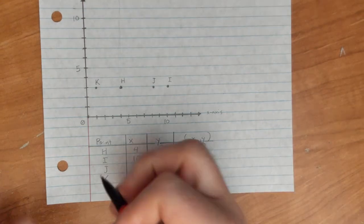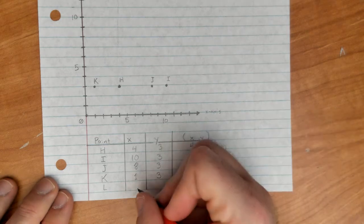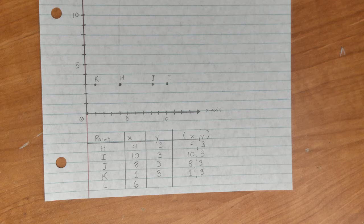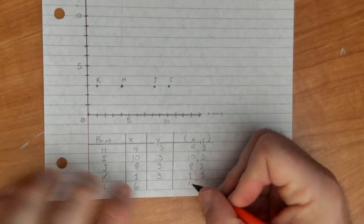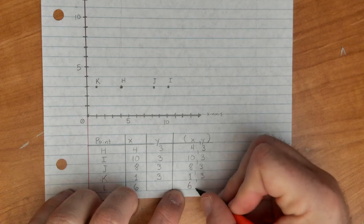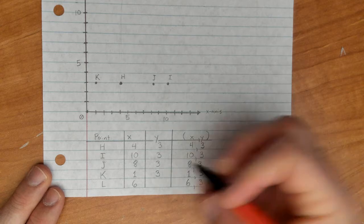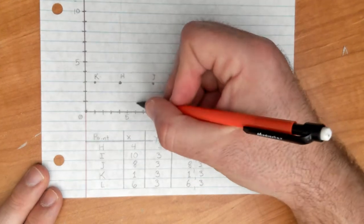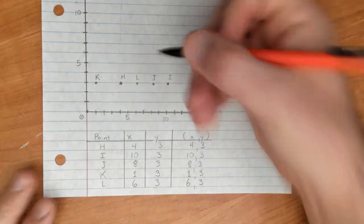Let's talk about point L. Point L is going to be at 6, and I'll bet most of you could probably guess the y coordinate already. Let's go with 3. So over 6, up one, two, three is L.